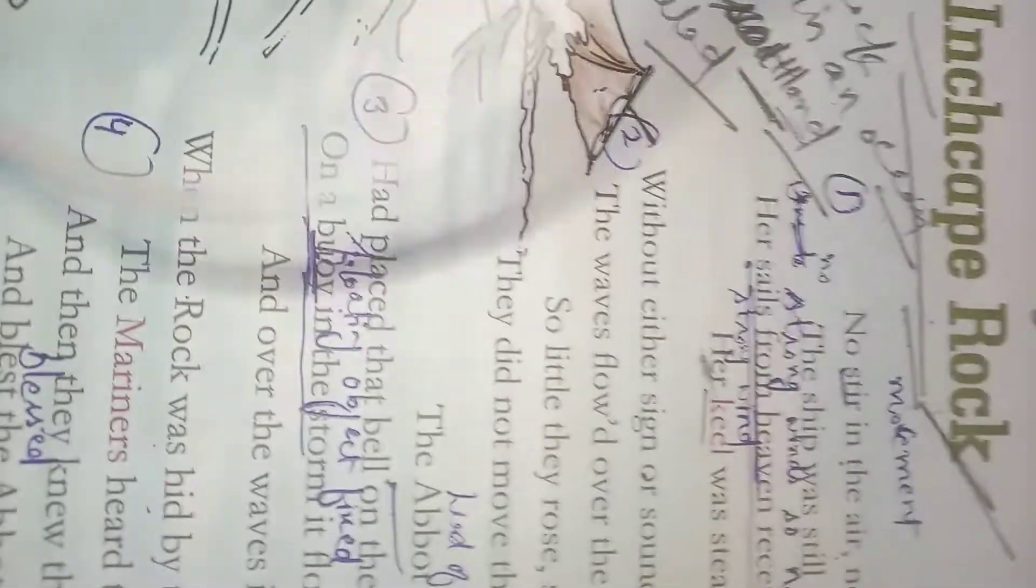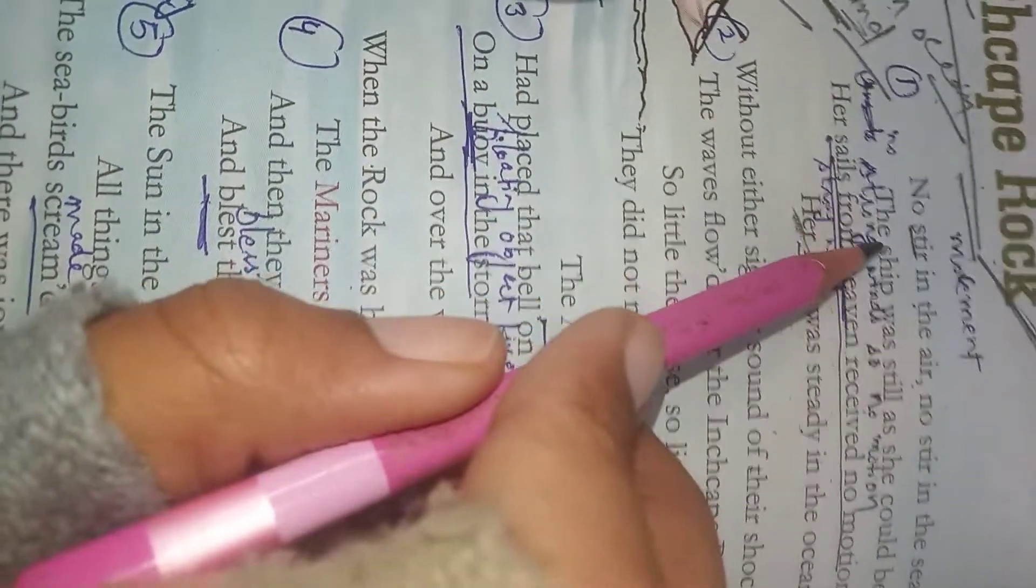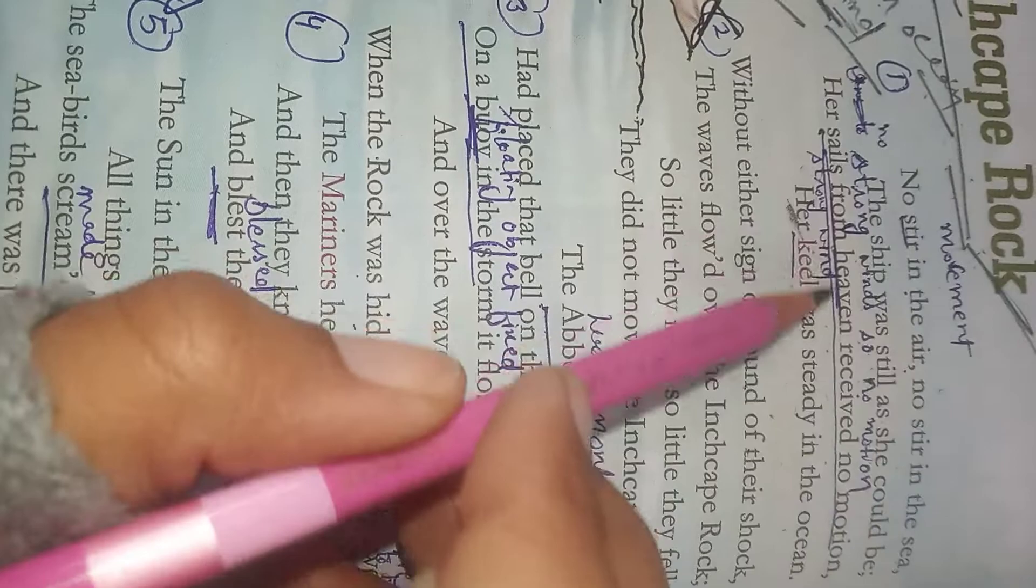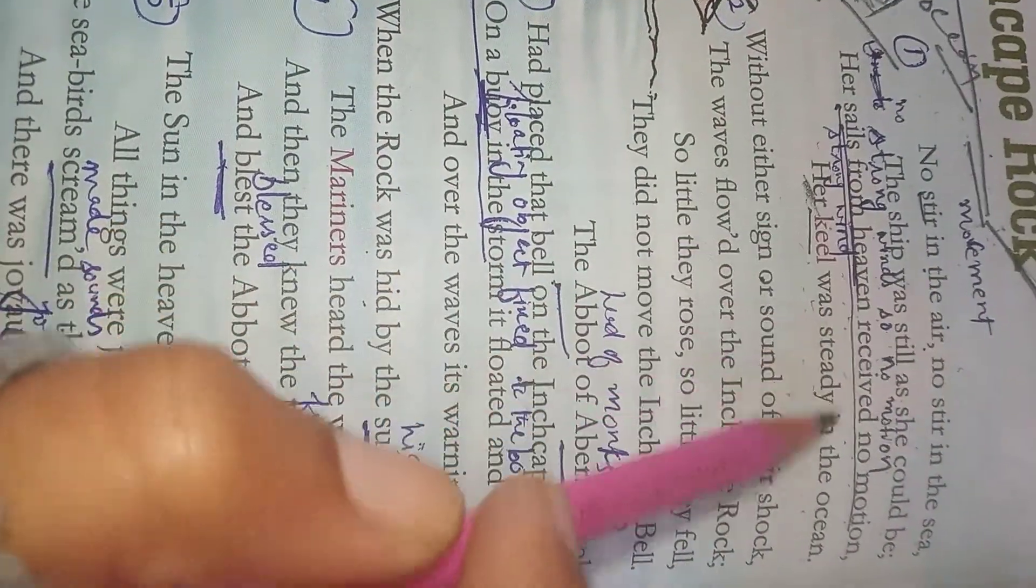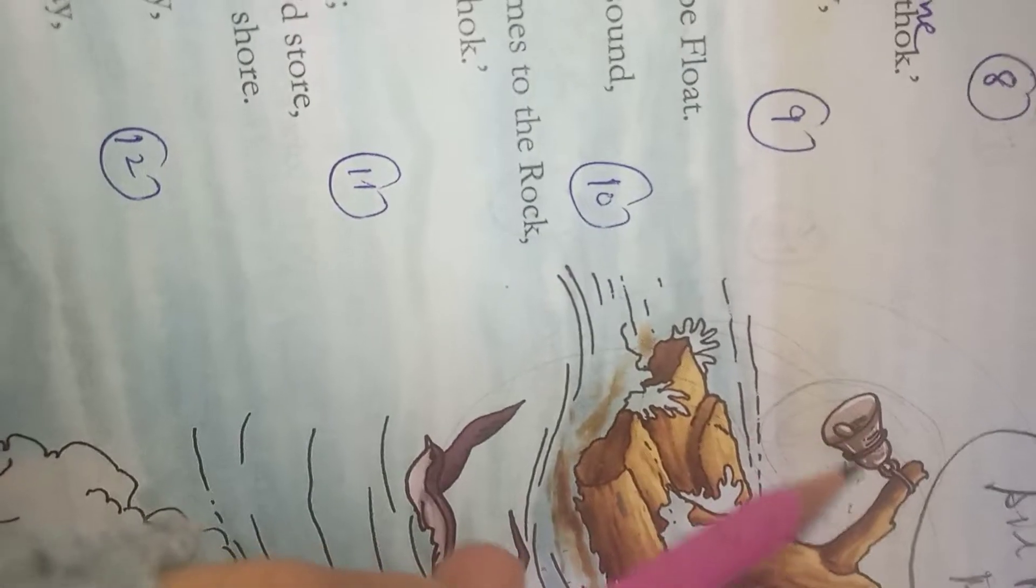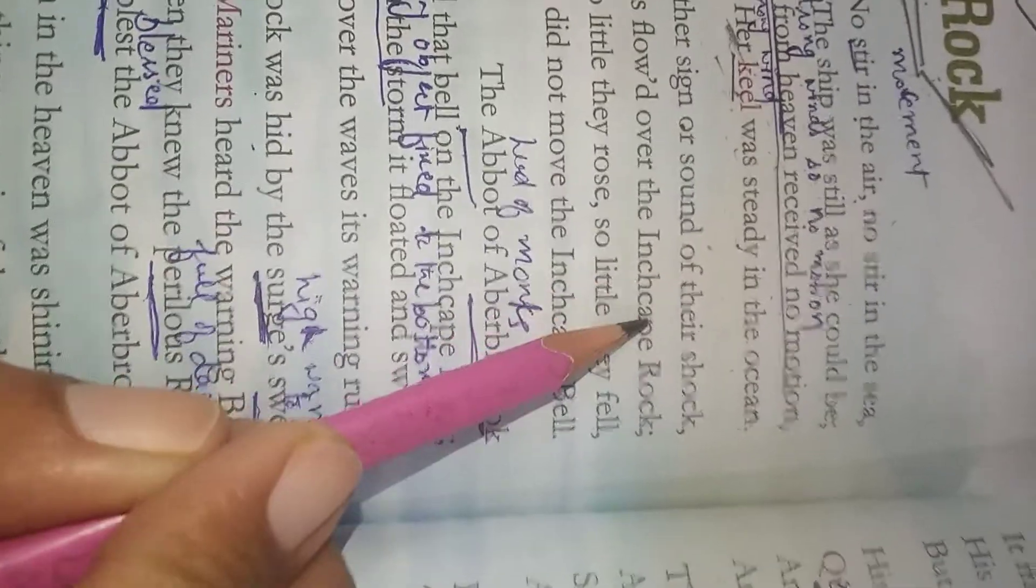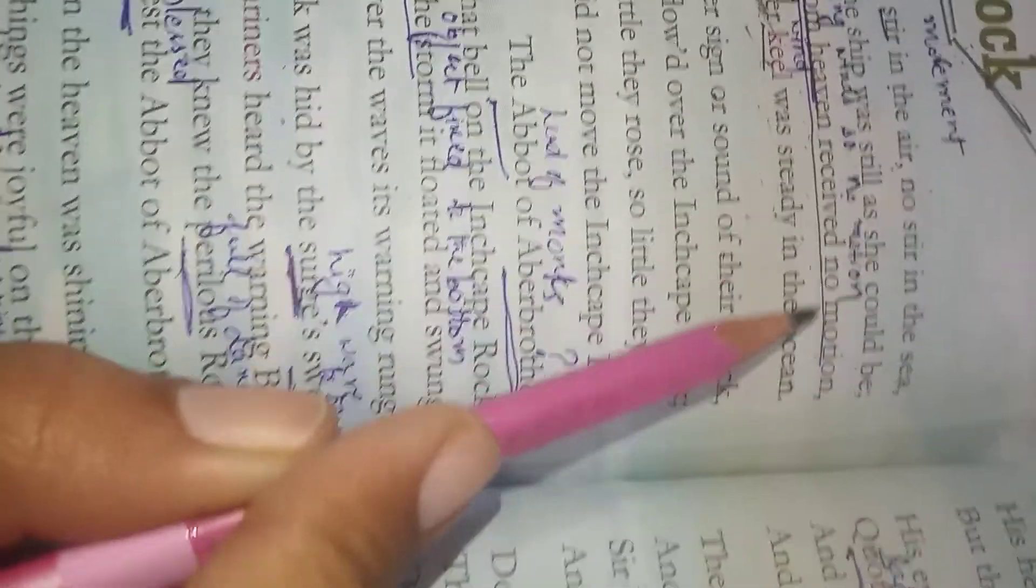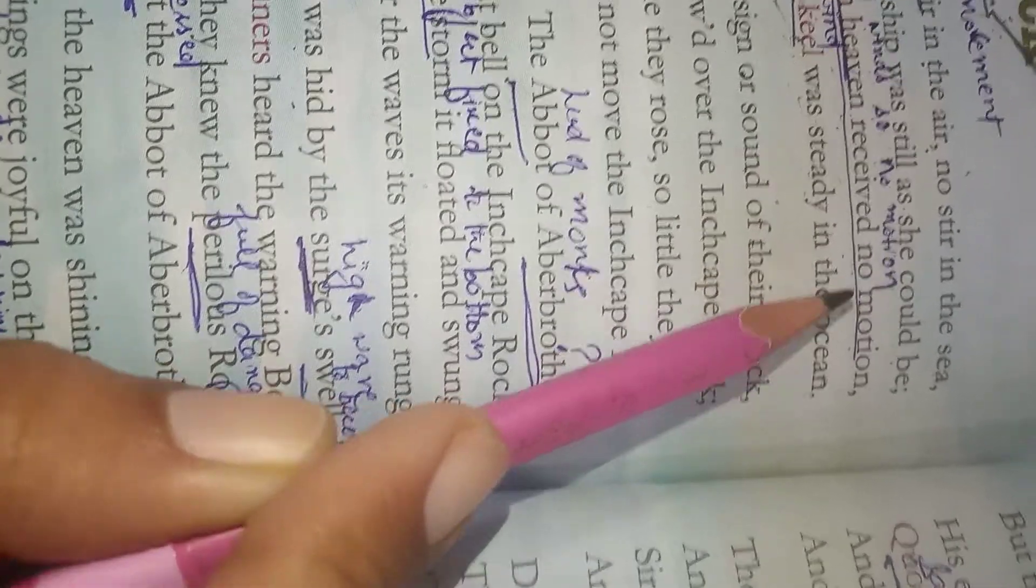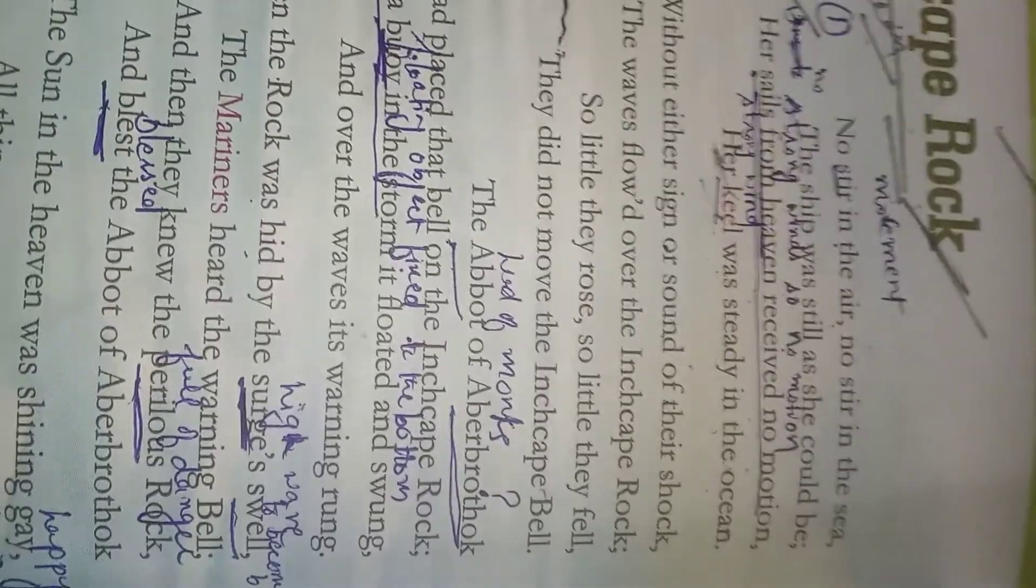We'll start from first stanza. No stir in the air, no stir in the sea - stir means movement. The ship was still as she could be, her sails from heaven received no motion, her keel was steady in the ocean. Keel is this platform where this bell is hanging. So what the poet says here: the ocean was completely at peace, there was no movement at all. The ship remained at one point in the sea. Even the keel of the ship was also steady. So as everything was completely at peace, there was no motion at all. The time was really good, there was no storm.